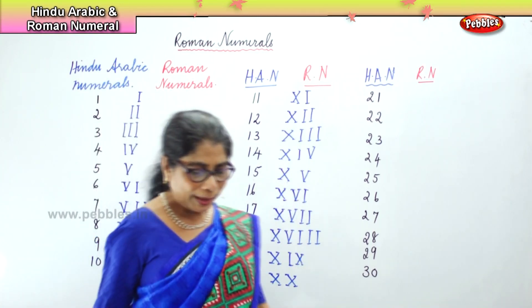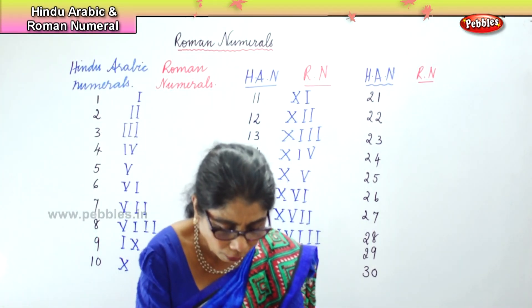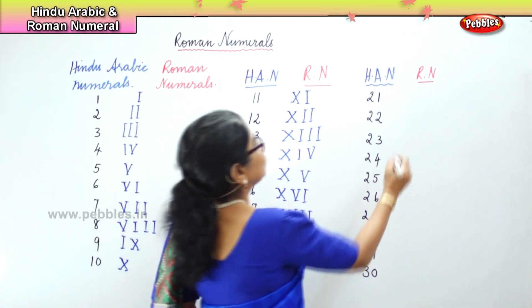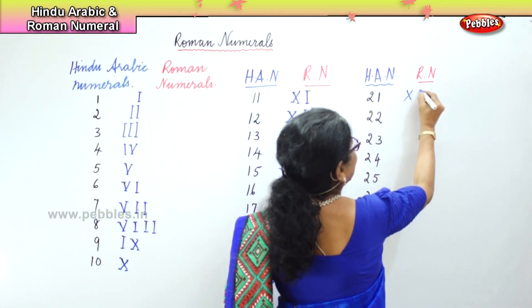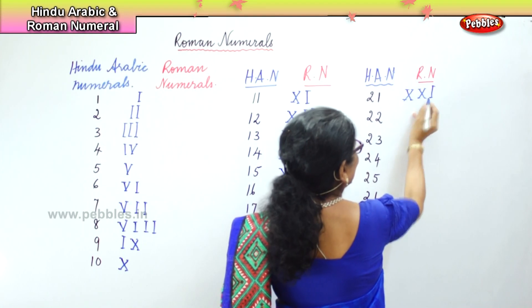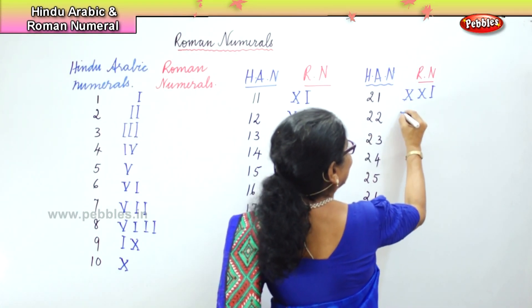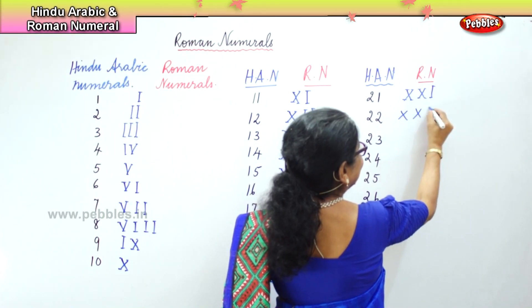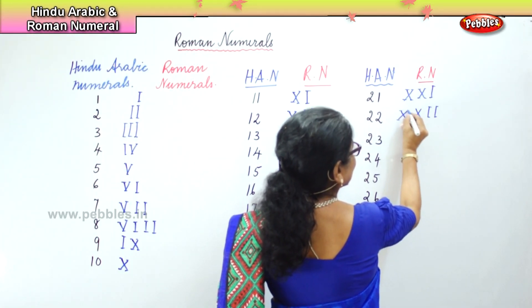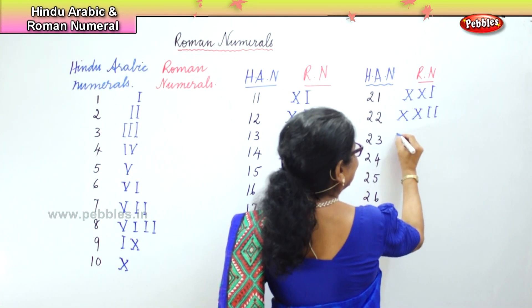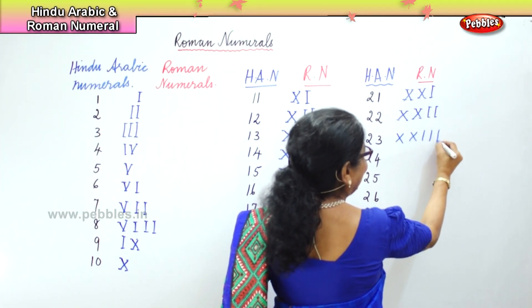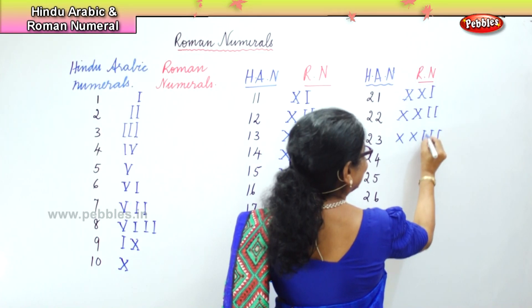Now we build on twenty-one to thirty. Twenty you know, and one more. Twenty in Roman numeral is ten and ten. Add one more and twenty-one is very easy. Similarly twenty-two: ten, twenty, twenty-one, twenty-two. One more repetition gives twenty-three: ten, twenty, twenty-one, twenty-two, and twenty-three.